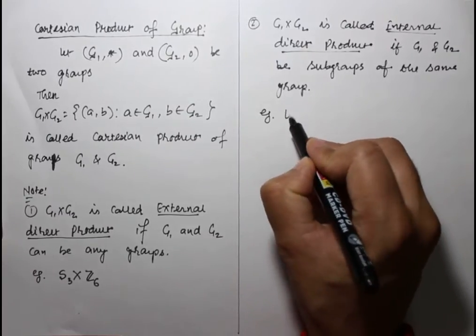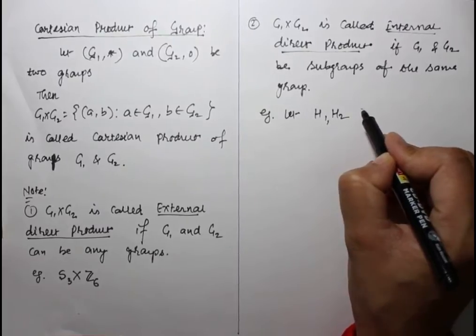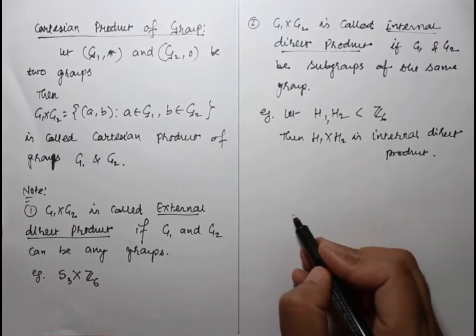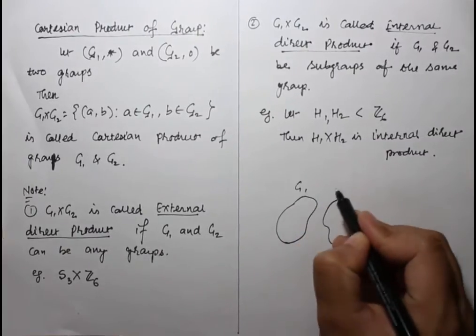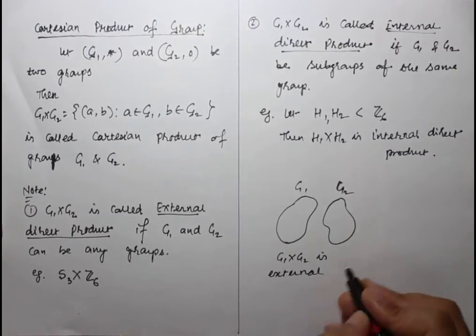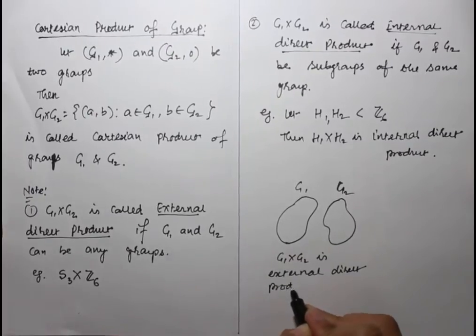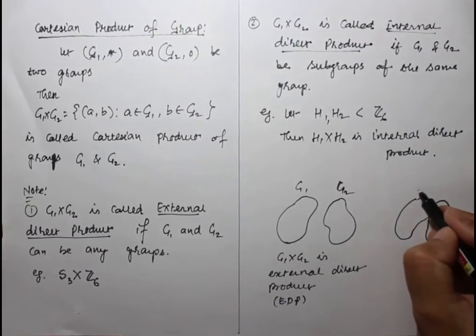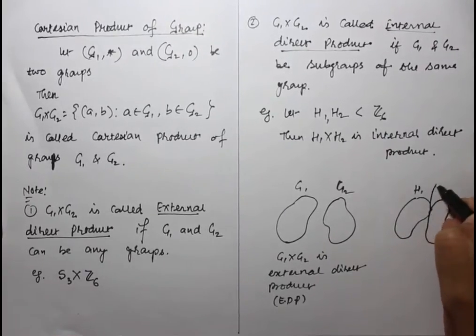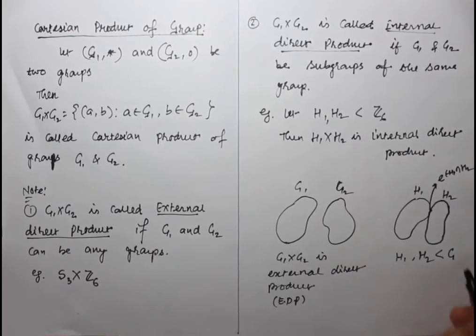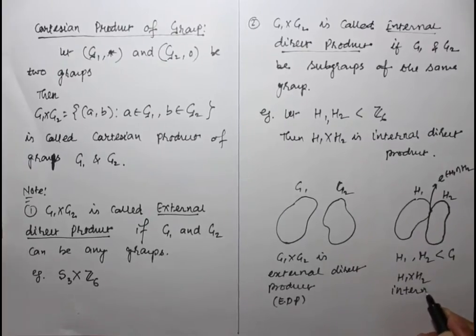For example, let H1 and H2 be subgroups of Z6, then H1 cross H2 is an internal direct product. For the external direct product, G1 and G2 can be any groups. For the internal direct product, H1 and H2 must be subgroups of the same group G, with at least the identity element in common.